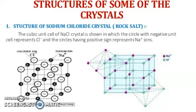The structure of sodium chloride crystals — generally we call it rock salt. The cubic unit cell of sodium chloride crystals is shown, in which the circle with negative sign represents Cl⁻ and the circle with positive sign represents Na⁺. You can see the chloride ion size is bigger than sodium. We are interested here in the crystal arrangements.